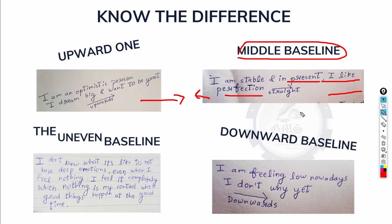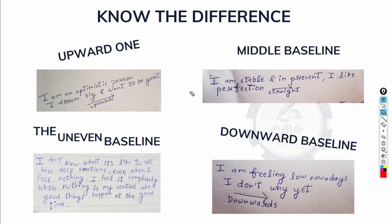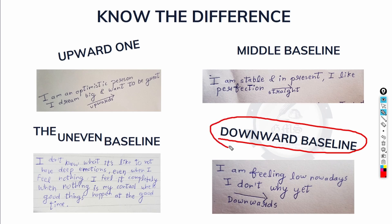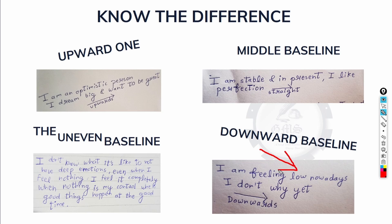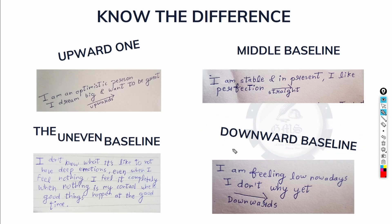Next is the downward baseline. How will you find this baseline? If a writer's handwriting tends to go in a downward direction, then the writer falls under this baseline. This indicates that the writer is feeling low and is feeling stressed about something — that's the reason the writer's baseline falls downwards.